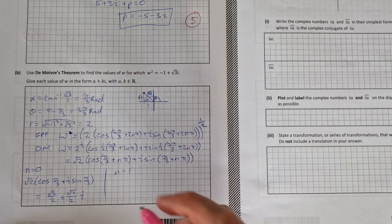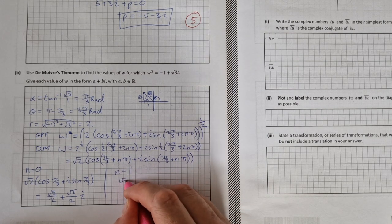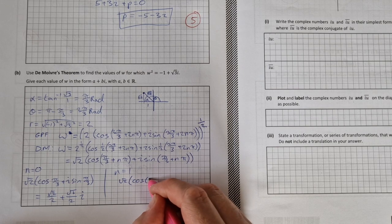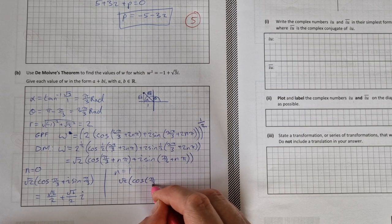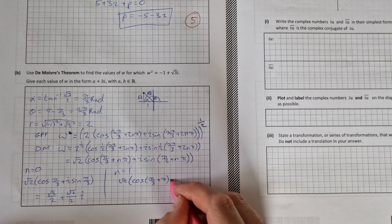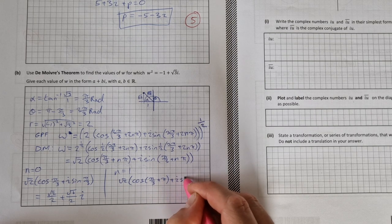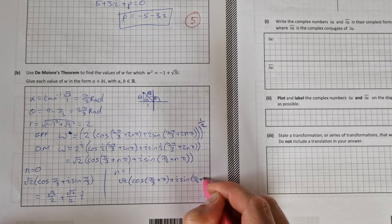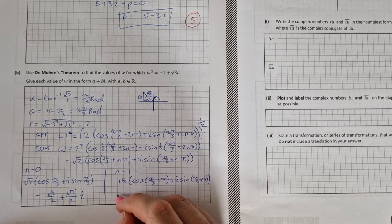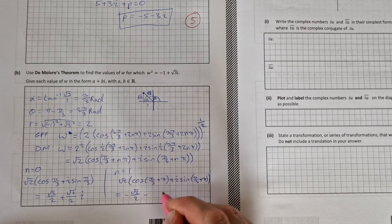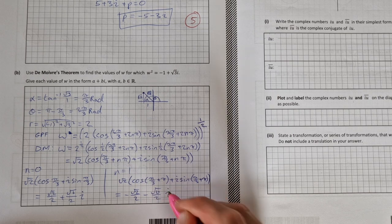And then for n equals 1, I have root 2 times cos of pi over 3. If n is 1, then that's just plus pi, plus i sine of (pi over 3 plus pi). So that works out to be minus root 2 over 2 minus root 6 over 2 i.